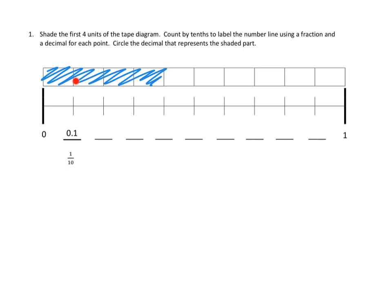So let's see. What would the next one be? The next spot here would be one, two. That would be two tenths. So I'm going to go ahead and write that first in fraction form because that's the one I'm more familiar with. But then I see, two tenths is also the same as 0.2, two tenths. Excellent. All right. I'm going to leave you guys to go ahead and label the rest of these points and then figure out what is the point that actually corresponds with four units of our tape diagram. Because we are going to circle the decimal that represents the shaded part.